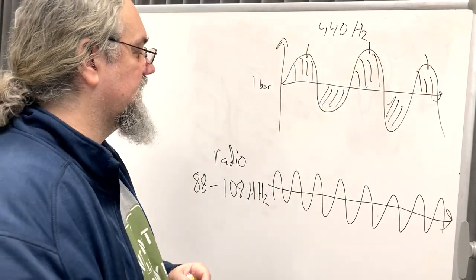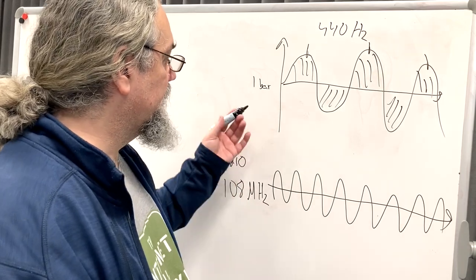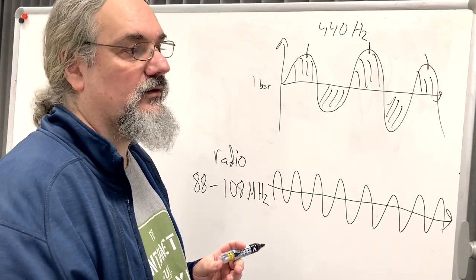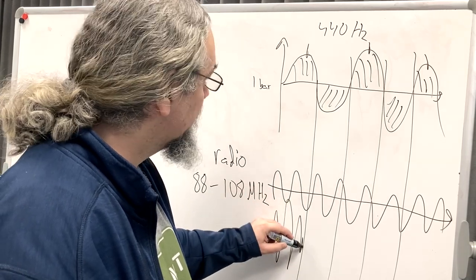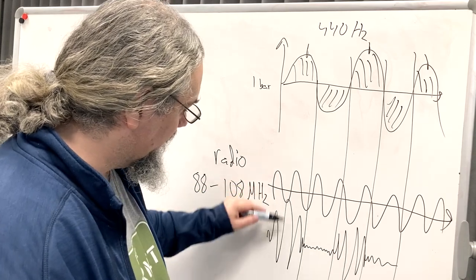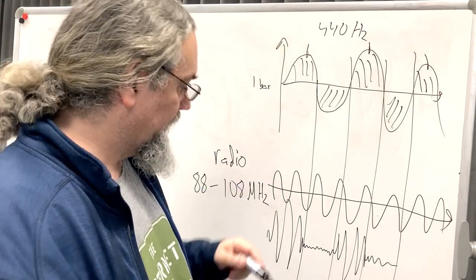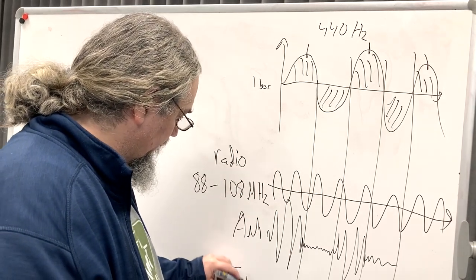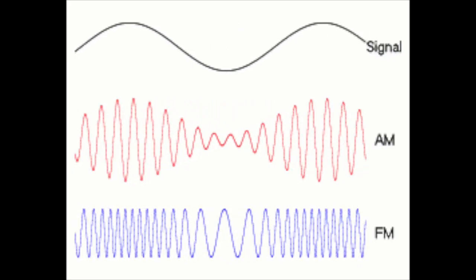If I want to transmit a signal, there are two ways to modify the carrier wave — that's called modulation. I can either modify the amplitude or the frequency of the carrier wave. That's called amplitude modulation or frequency modulation — AM or FM radio. In AM, the amplitude (the height of the waves) corresponds to the compression of the air. In FM radio, you instead modify the frequency: higher frequency when the signal goes up, lower frequency when it goes down.